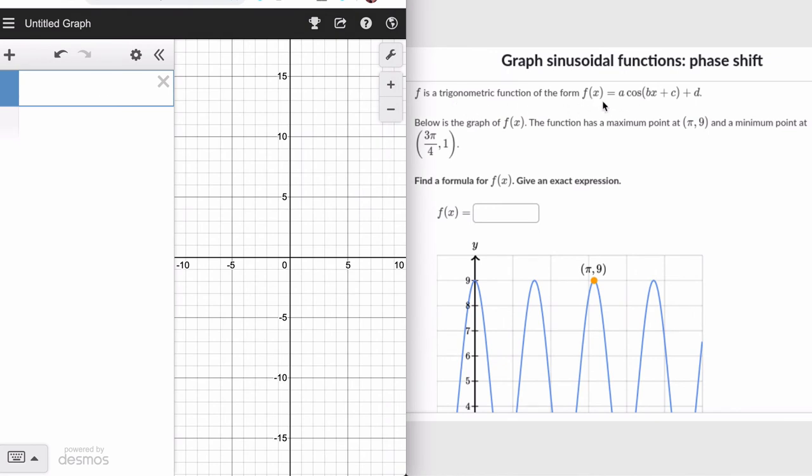Let's break it down piece by piece. They want the function in this form: f(x) equals a times the cosine of bx plus c plus d. So in order to get an equation in this form, let's find out all the information we need.